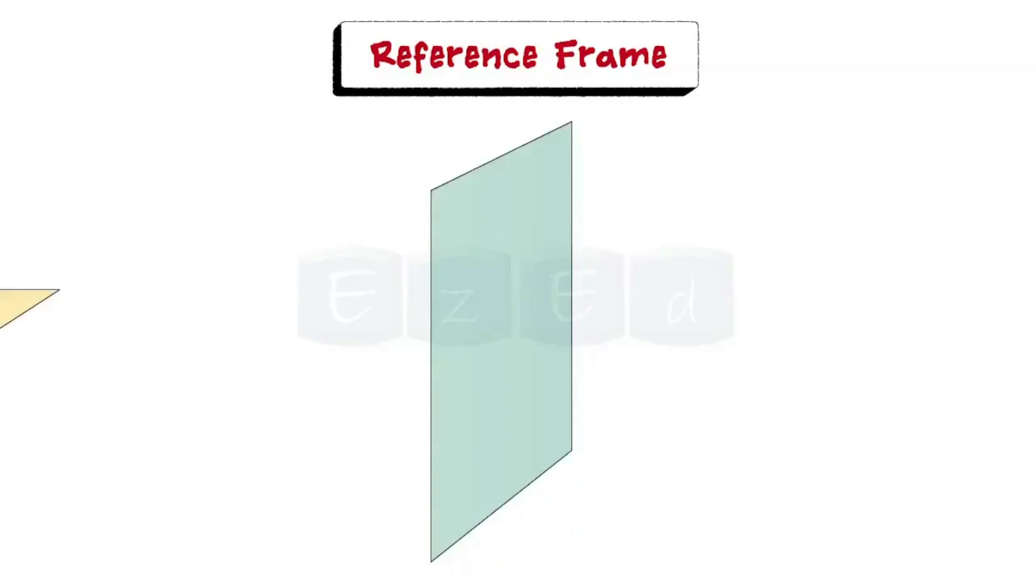For that, we intersect two planes, that is vertical plane and horizontal plane. Horizontal plane is also called as HP and vertical plane is also called as VP or FRP, frontal reference plane.